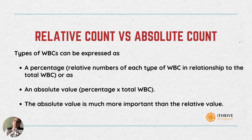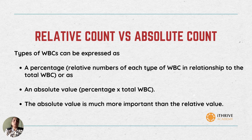Now, what are relative counts and absolute counts? The types of WBCs we just saw can be expressed as a percentage — that is, a relative number of each type of WBC in relationship to the total WBC — or as an absolute value, that is as a percentage of the total WBC itself. The absolute value is usually much more important than the relative value.